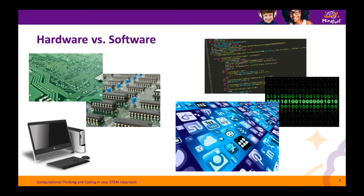The software is the digital computer code that exists in the memory of the computer. Software can take many forms: an operating system such as Windows, programs such as Microsoft Word or Google Chrome, computer games, or other applications. Coding or programming involves writing this software, and this uses computational thinking.